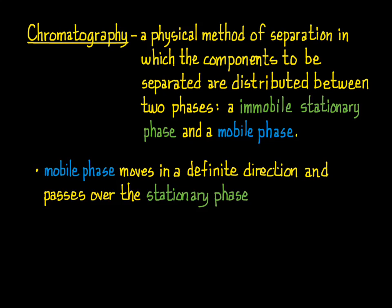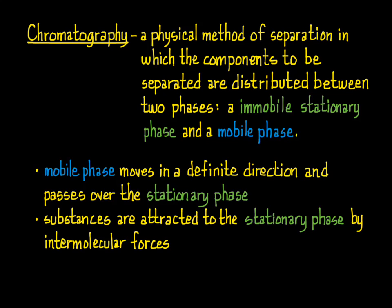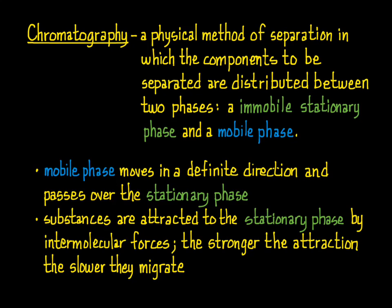In all chromatographic methods, the mobile phase moves in a definite direction and passes over the stationary phase. The substances in the mixture are moved through the stationary phase to which they are attracted by intermolecular forces. The stronger the attraction, the slower a substance migrates through the stationary phase.